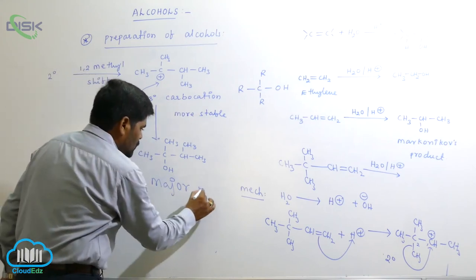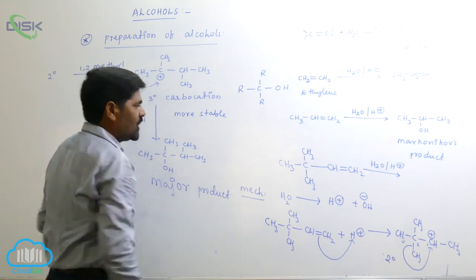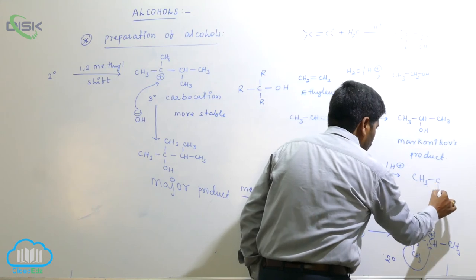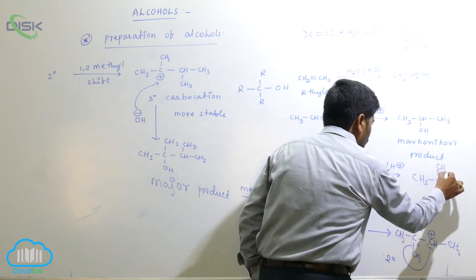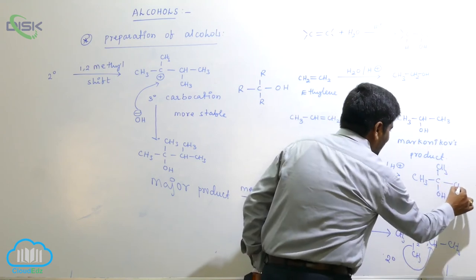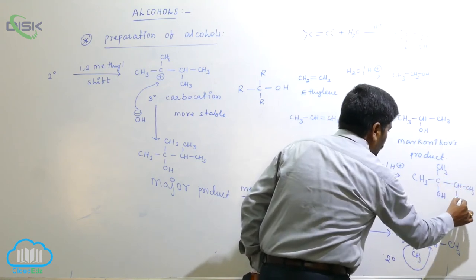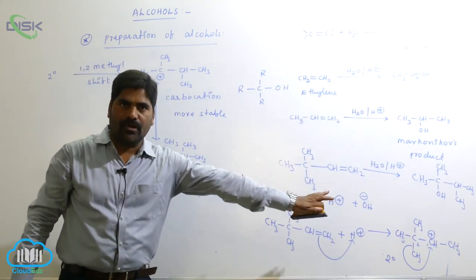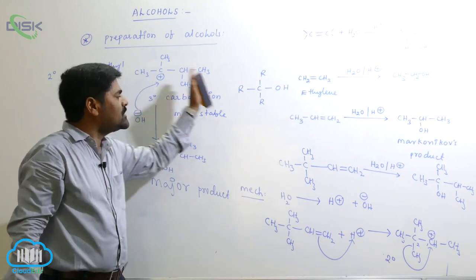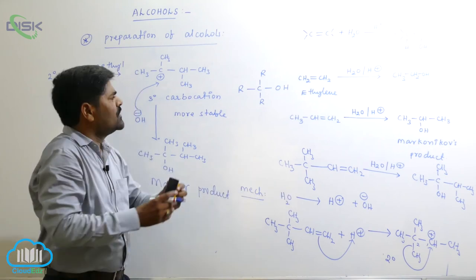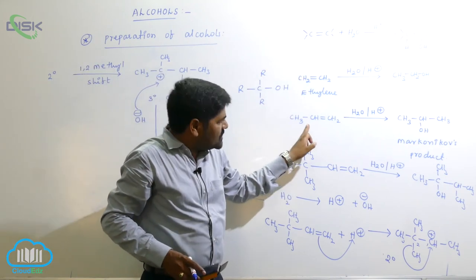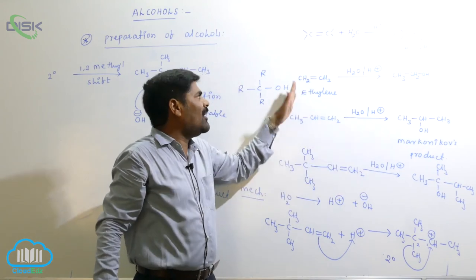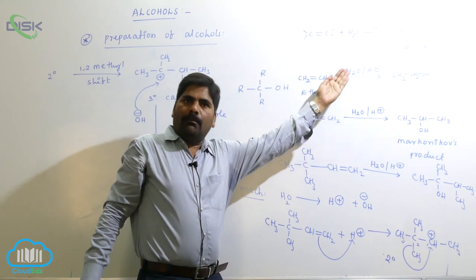So the major product of this reaction is CH3-C(OH)(CH3)-CH3. These types of examples are very important, especially in entrance examinations. Also remember: if this were a symmetrical alkene, there is no need to apply Markovnikov's rule.